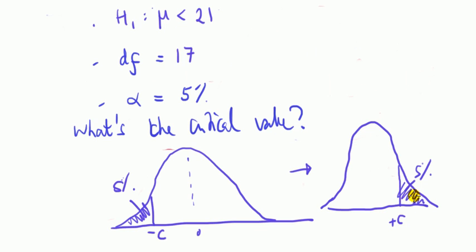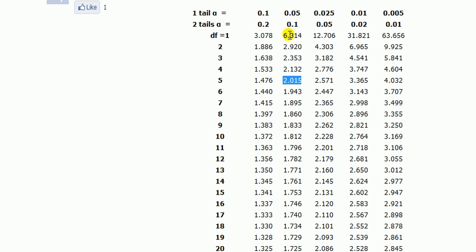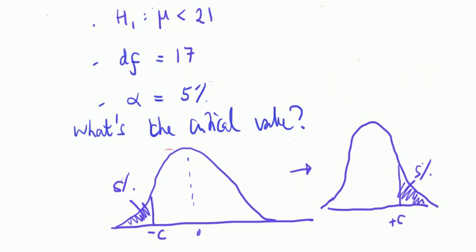If our test statistic is less than minus 1.740, we reject the null; otherwise we do not reject the null.